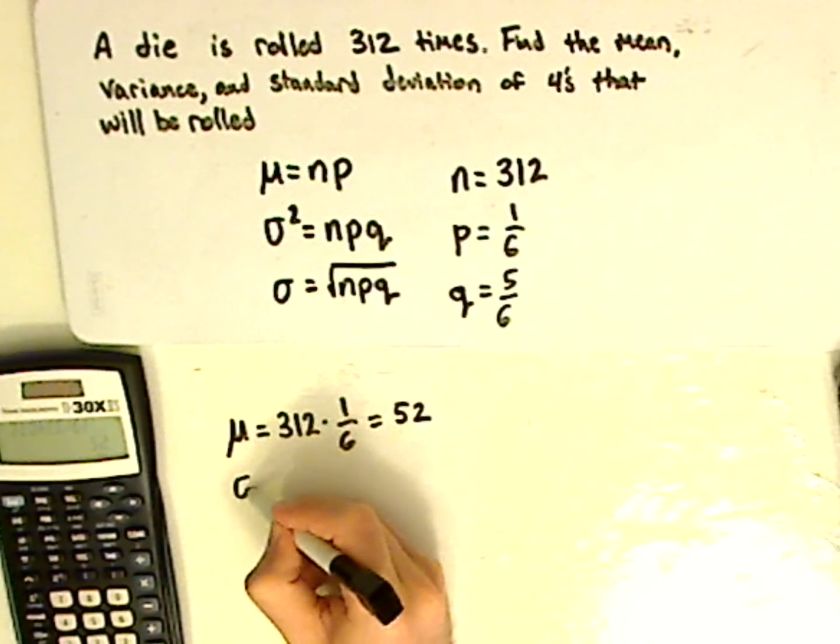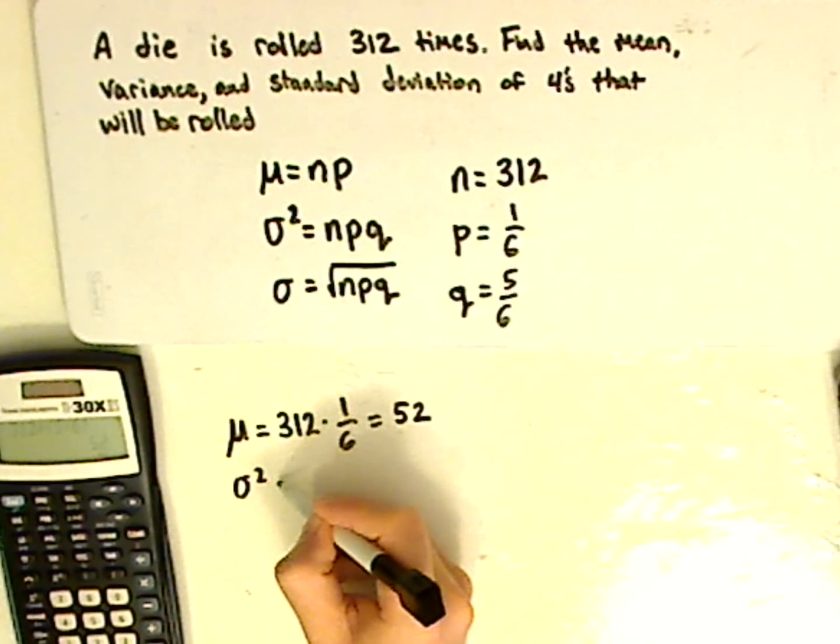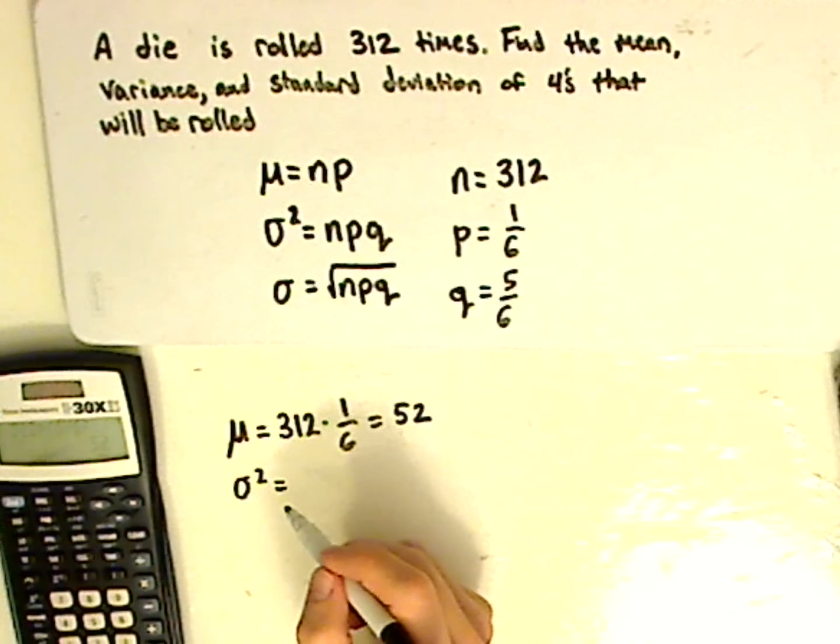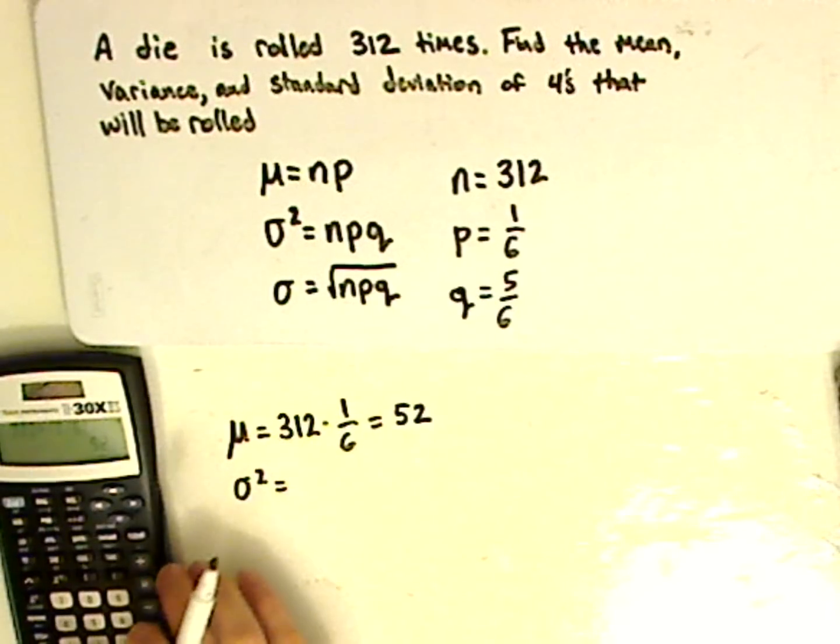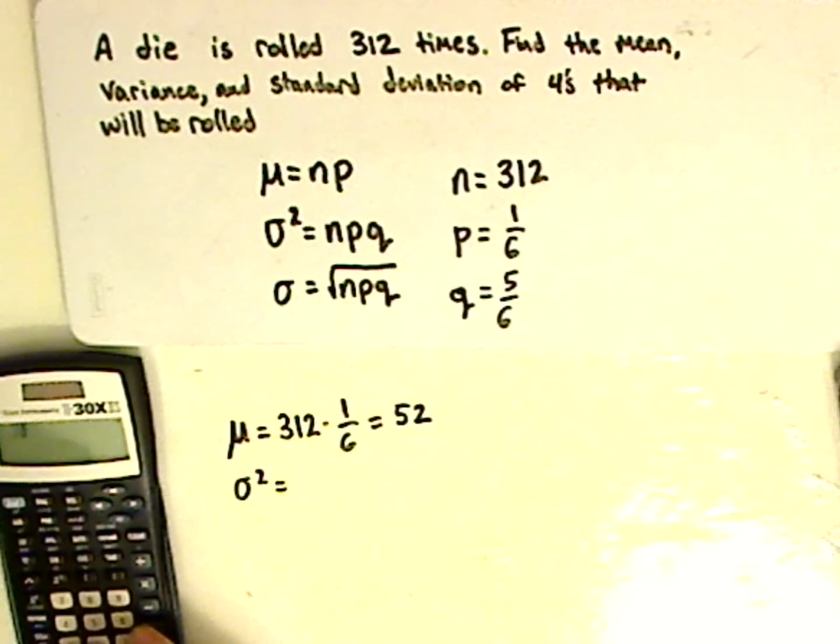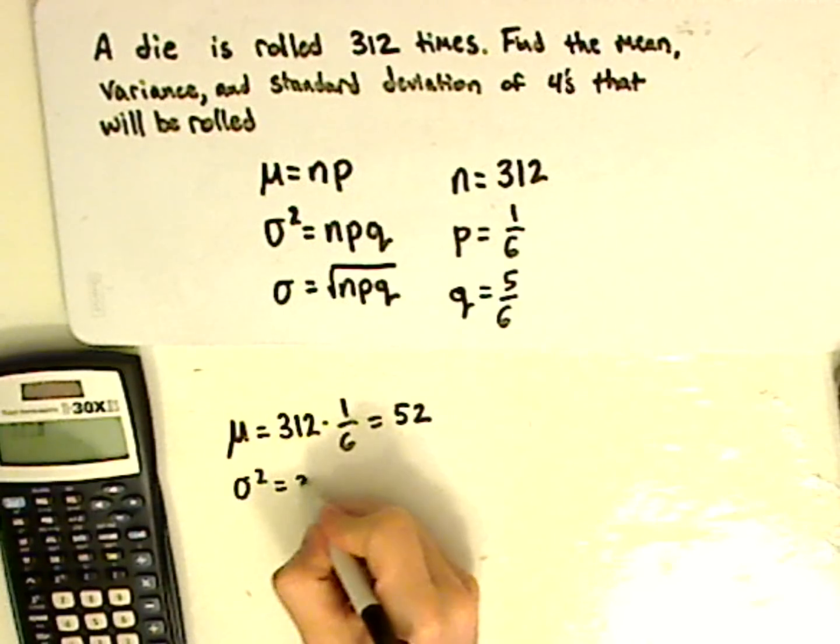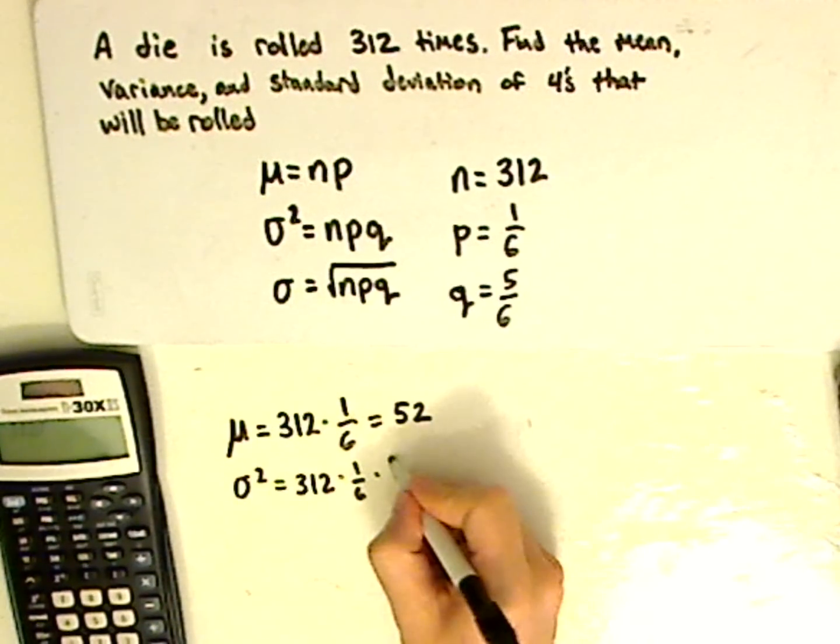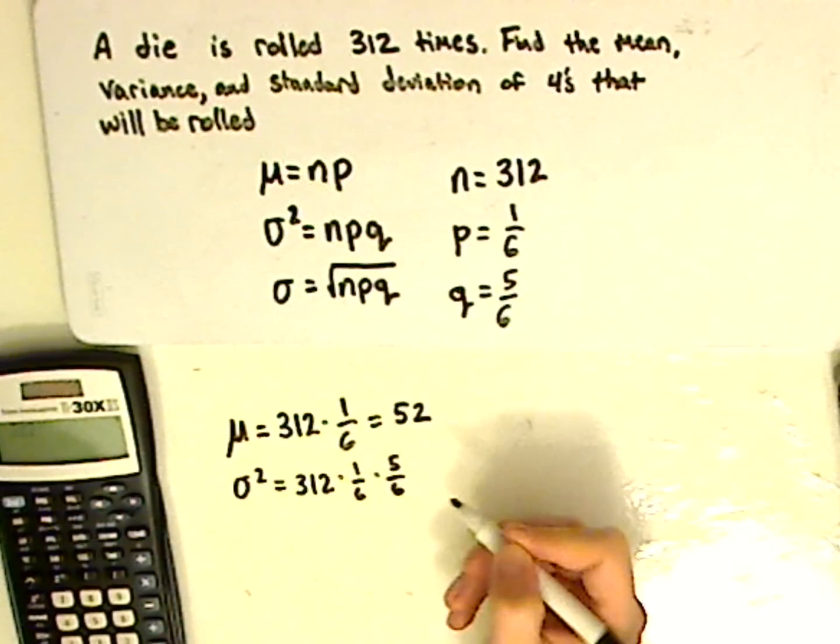So variance. Remember, both variance and standard deviation are dealing with spread. So it would be 312 times 1 over 6 times 5 over 6.